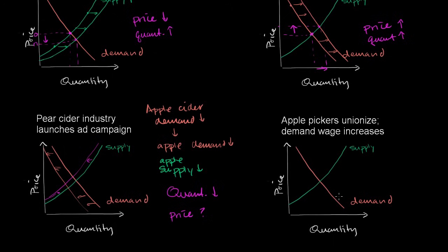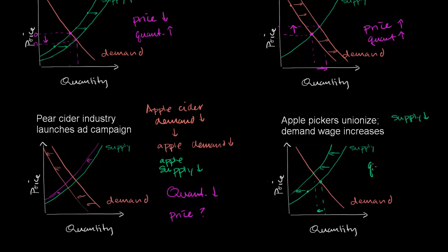Now let's look at this one: the apple pickers unionize and demand wage increases. This is an issue for the suppliers — one of their inputs, one of their costs of production, which is labor, has gone up. If their cost of production has gone up, at a given price point they are less profitable and less willing to produce apples. At a given price point, they will supply a lower quantity — this is going to lower supply. When you lower supply, the equilibrium quantity goes down and, assuming nothing changes with demand, the equilibrium price goes up. Quantity went down and price went up.